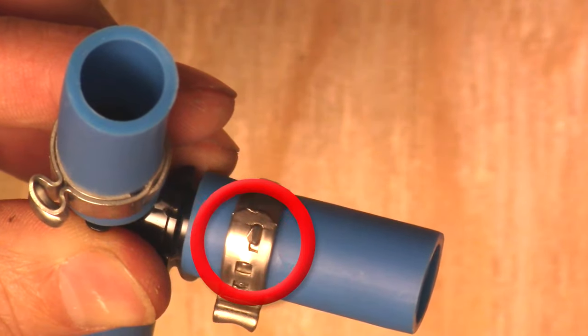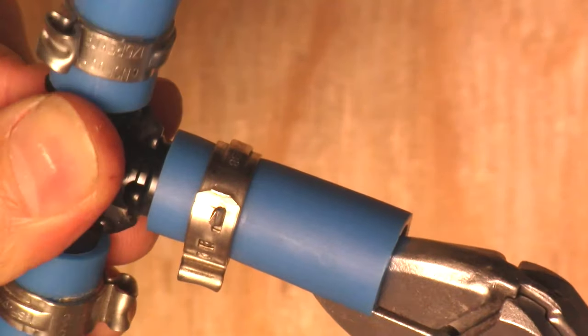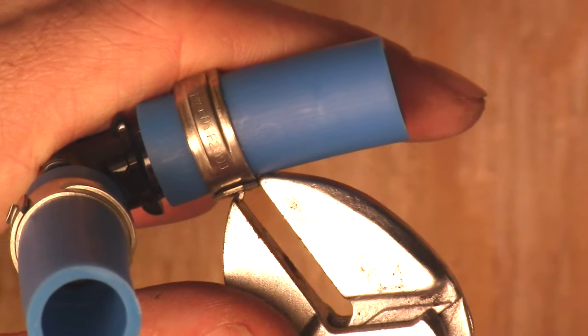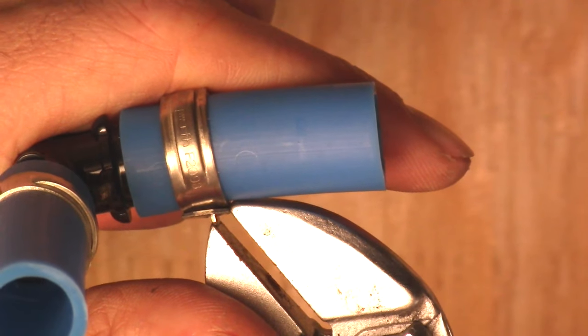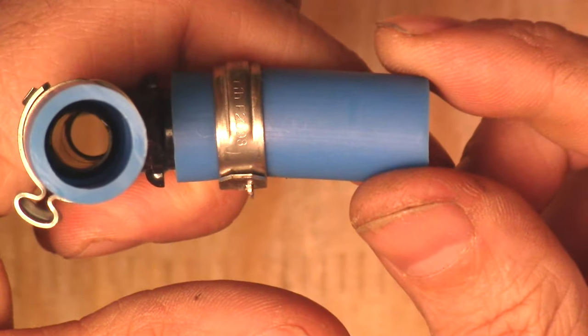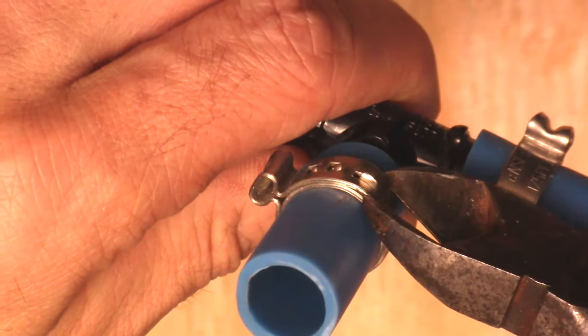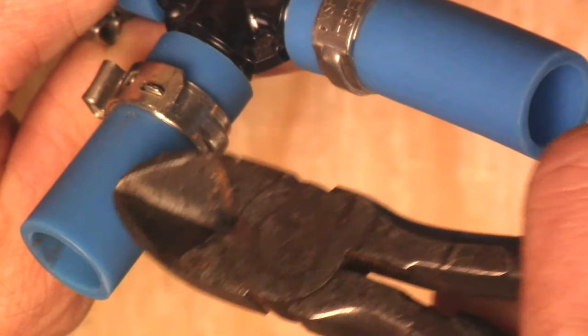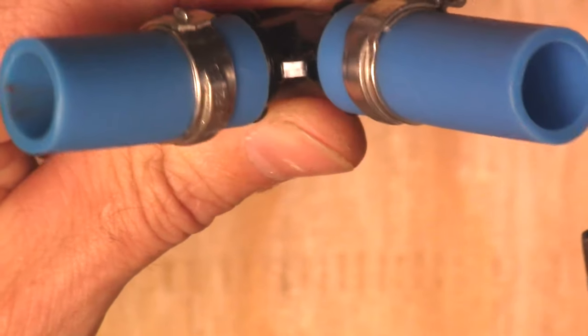First I twist the pipe so this little tab is accessible, then use the pliers to bend it straight like this. Second, using the old side cutters, I'm going to squeeze between these two pieces of metal like this until they begin to separate.